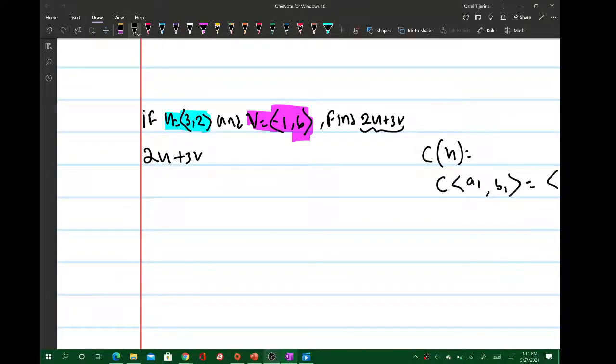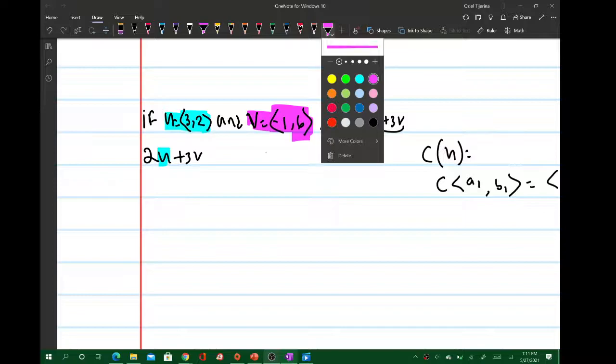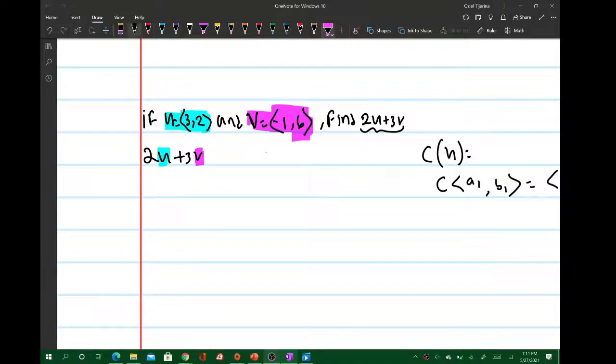So therefore we would have, this is vector u and then this is vector v. So we can write this as 2 times the vector <3, 2> plus 3 times the vector <-1, 6>.